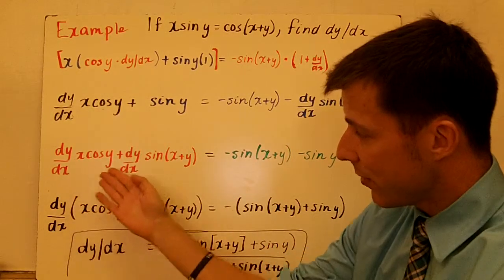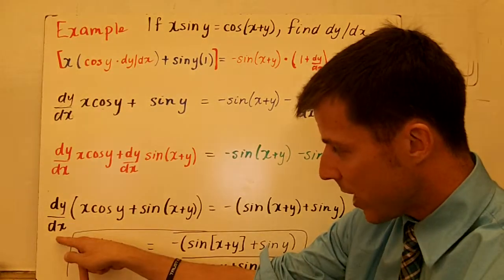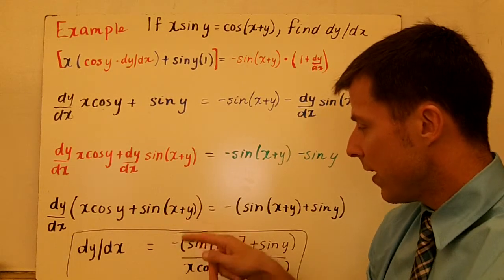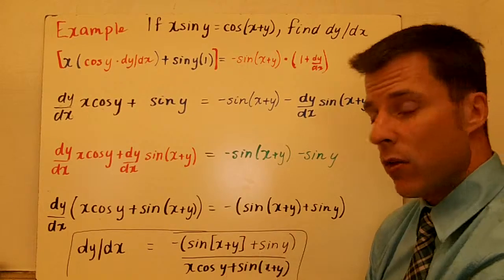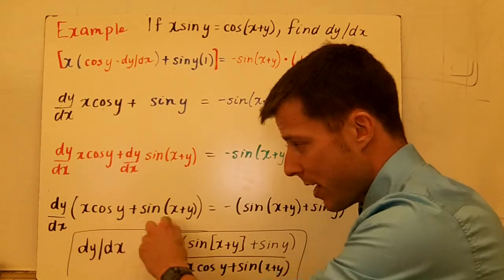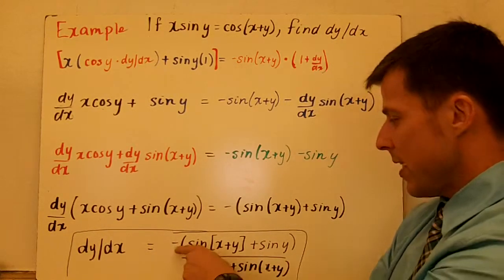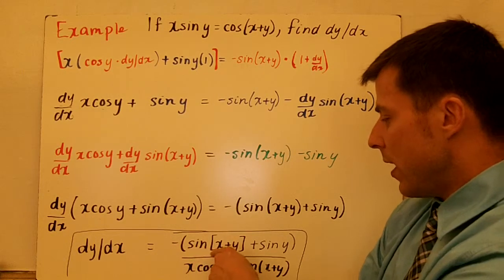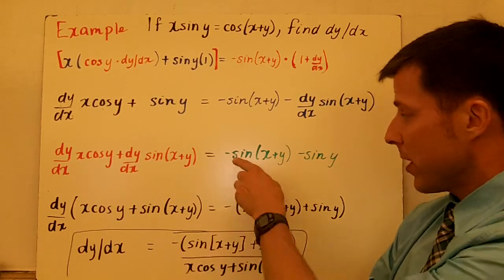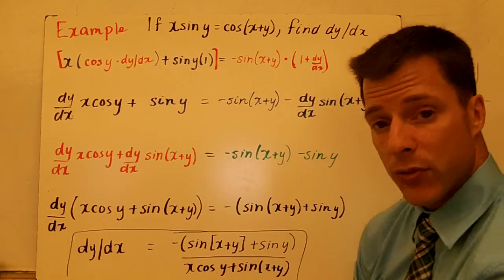Now I can factor out the dy/dx — two terms with this same term factored out. I factor out the dy/dx and I'm left with x cosine of y plus sine of x plus y, and I just leave the right side alone. To get dy/dx by itself, divide by this expression. So my derivative is negative sine of x plus y plus sine of y — I factored out the negative because they were both negative — divided by x cosine of y plus sine of x plus y.